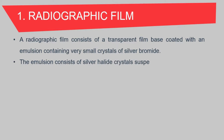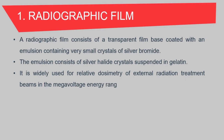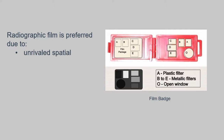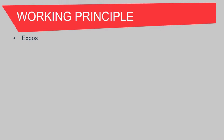The emulsion consists of silver halide crystals suspended in gelatin. It contains 95% silver bromide and 5% silver iodide. It is widely used for relative dosimetry of external radiation treatment beams in the mega voltage energy range. This film is used because of its high spatial resolution, low cost and wide accessibility. This image shows a film badge dosimeter that is widely used as a personal dosimeter.